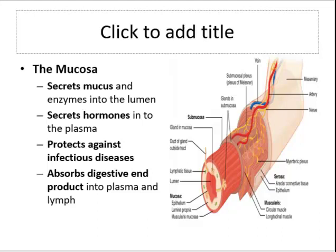In several sites, the circular layer thickens to become a sphincter — like a rubber band — which regulates passage of materials and prevents backflow. Blood vessels, lymphatic vessels, and a large number of nerve fibers are located between the two layers. The nerve plexus helps coordinate the tone of both layers of the muscularis externa and the secretory activities of the mucosa.